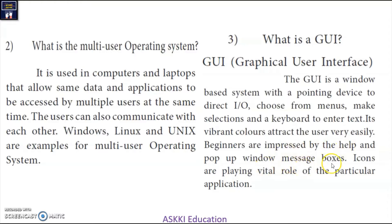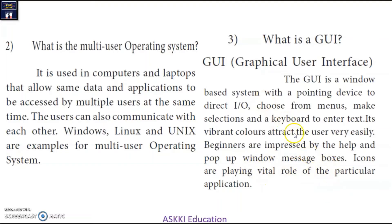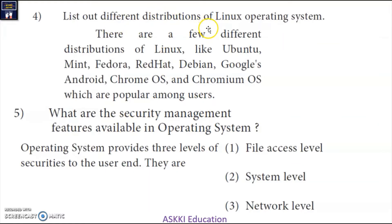When we work in a window, message boxes pop up — for example, if we close an application, a dialog asks 'Do you want to save?' — which helps the user. Icons play a vital role for particular applications and are available on the desktop for easy access. This is all about GUI.